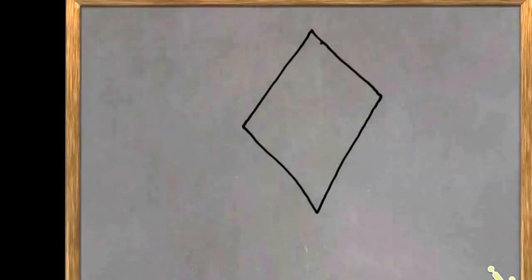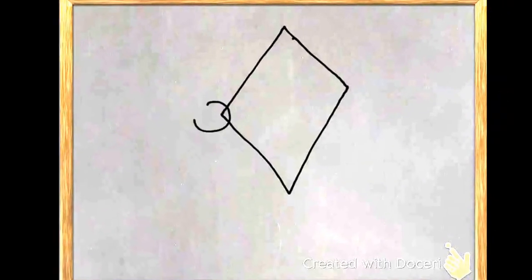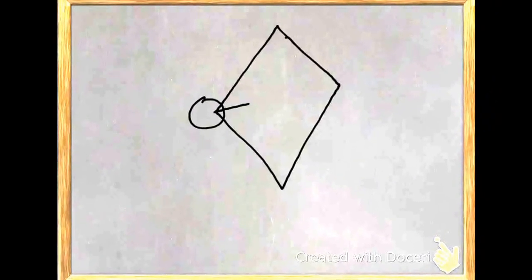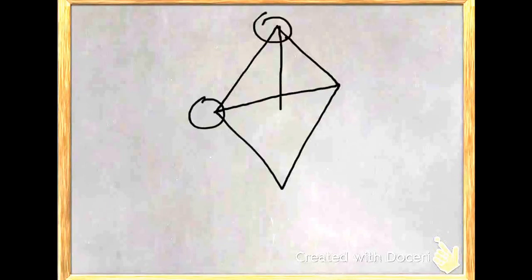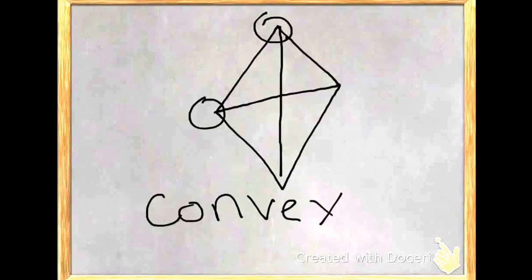Here I have a quadrilateral polygon, and I'm going to connect the vertices to make a diagonal. And it's all on the inside. So I know that this is a convex polygon.